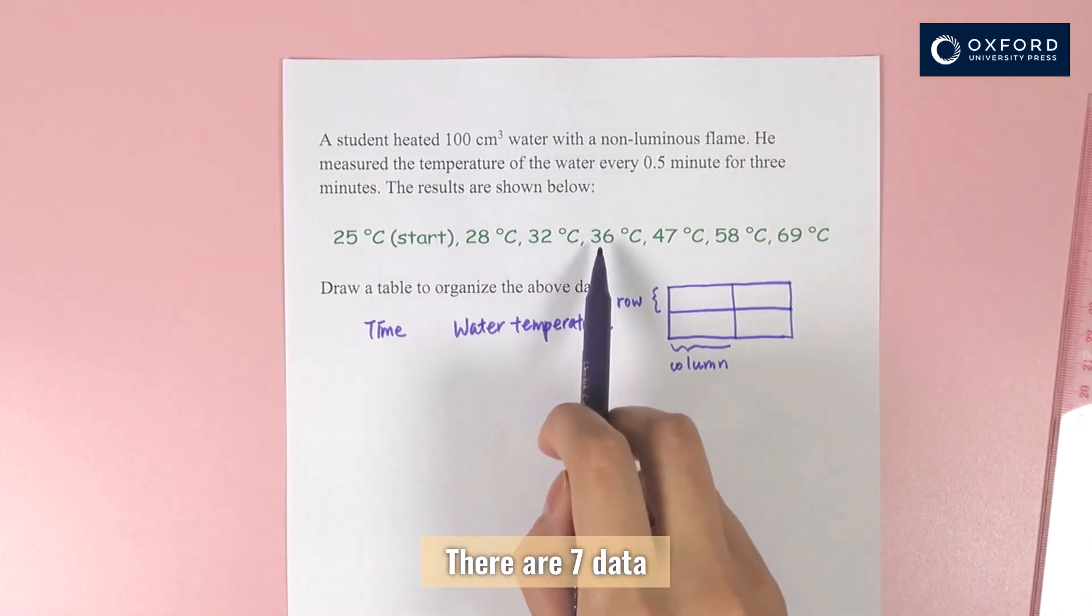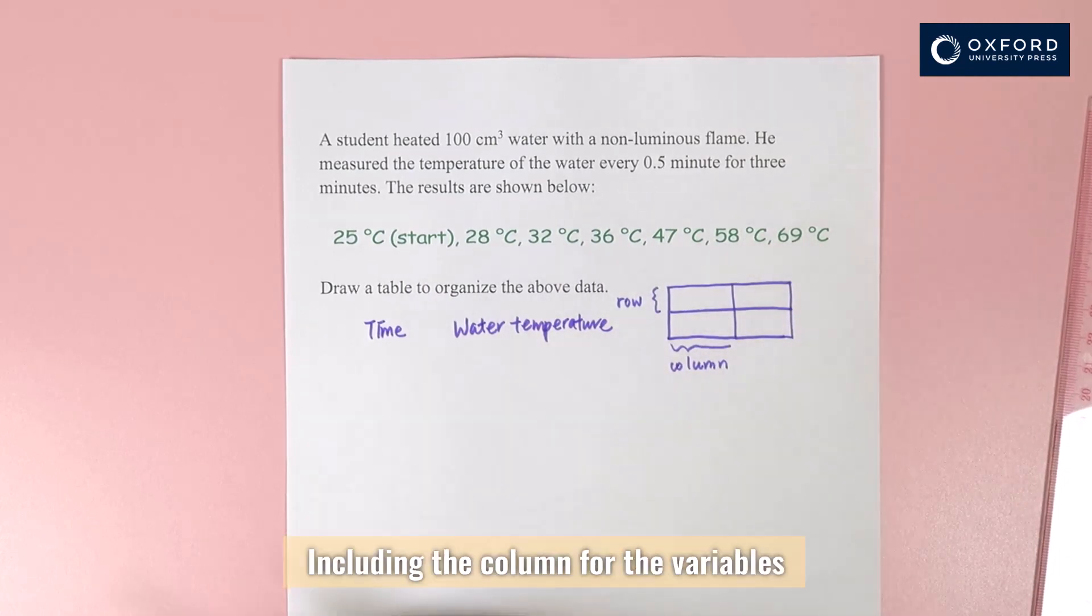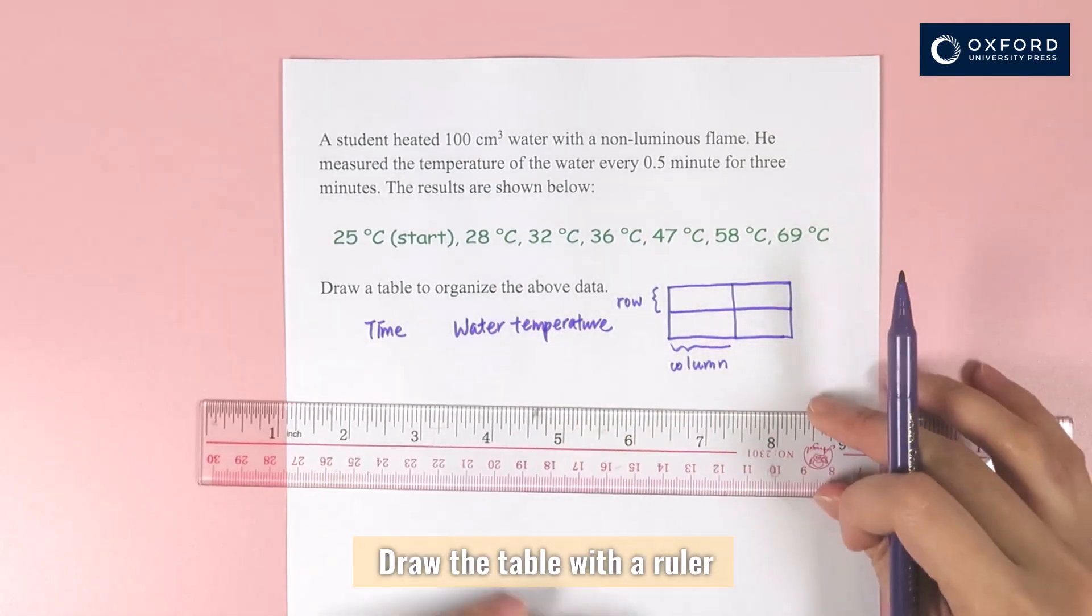There are seven data. Including the column for the variables, the table should have eight columns. Draw the table with a ruler.